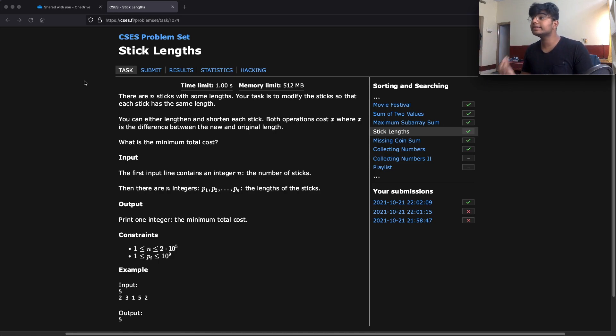The way we find this cost is let's say we had a stick of length 5 and we shortened it to a length of 4. The cost is going to be the difference between that which is 1. Likewise let's say we had a stick of length 1 and we increase the length to a length of 3, then again the cost would be the difference which in this case is 2.